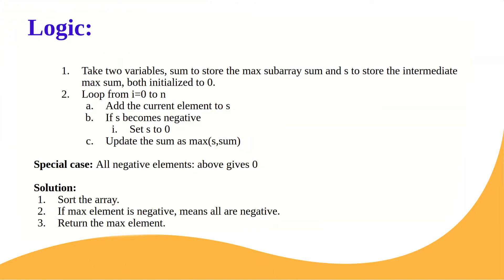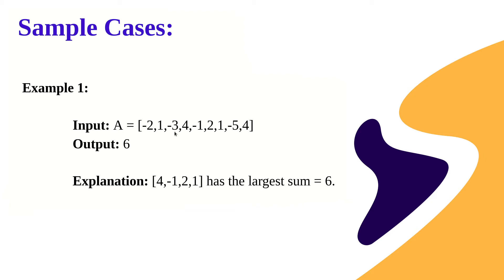Let's discuss the efficient solution. We take two variables: sum to store the max subarray sum, and s to store the intermediate max sum, both initialized to zero. The underlying logic is that any negative number should be taken only when adding the previous or next number to it gives us a higher sum. The answer is four minus one two one — even though minus one decrements the sum, we must take elements in contiguous manner and cannot skip any number.